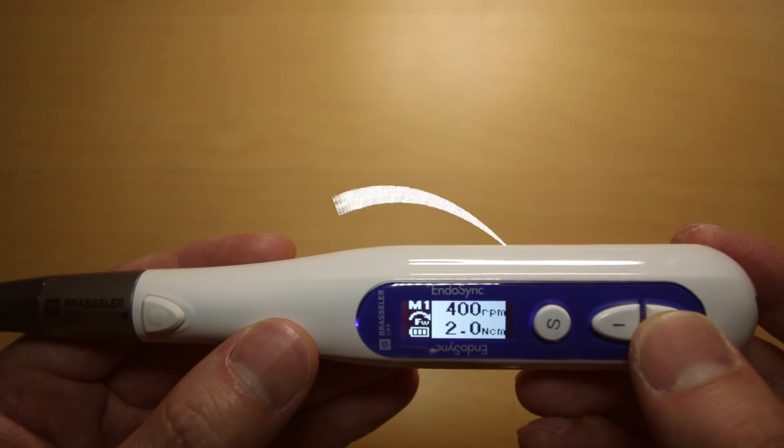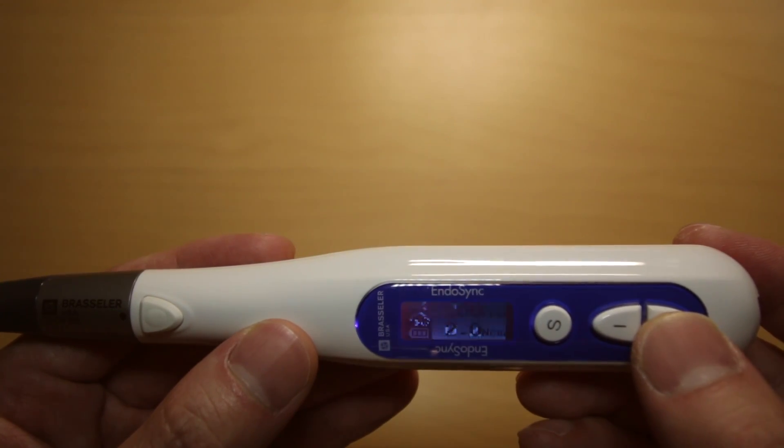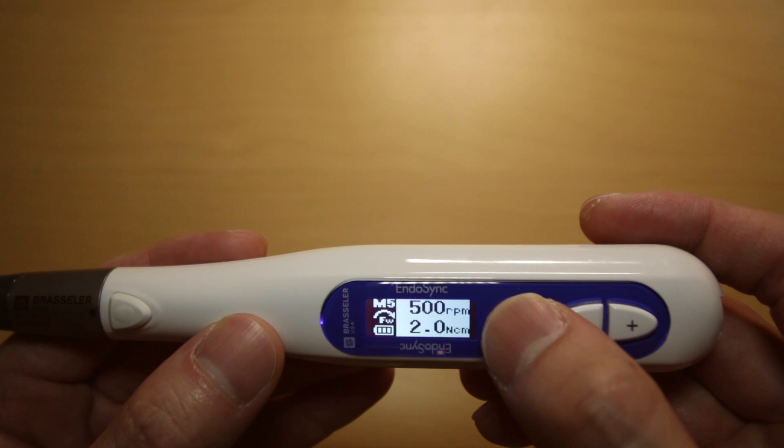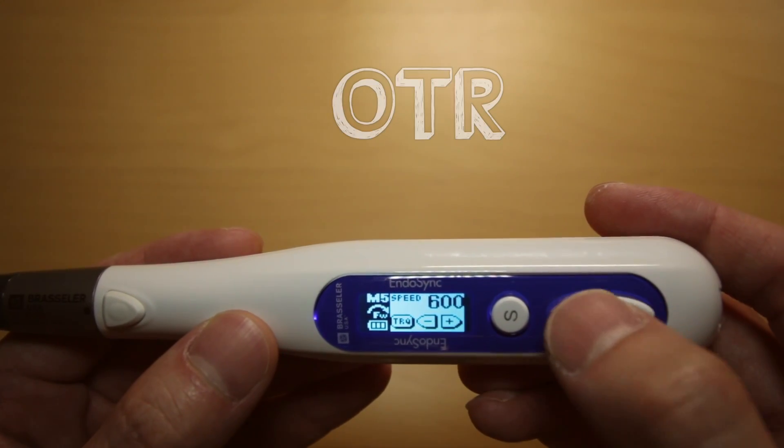This handpiece also has six memories, which is nice. You can set your RPMs and torque limits for each memory. But I would say the most important function that you would set up in a given memory is whether or not you want OTR.